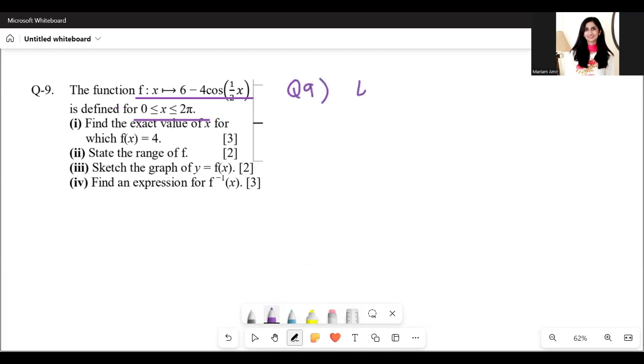So 4 equals 6 minus 4 cos half x. Bringing 4 cos half x to the left hand side, we get minus 2 here. Then we get plus 2 from 6 minus 4, and then cos half x equals half.